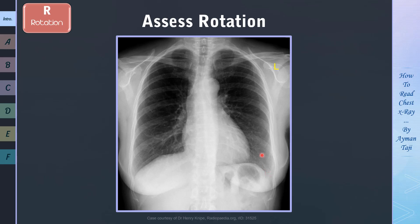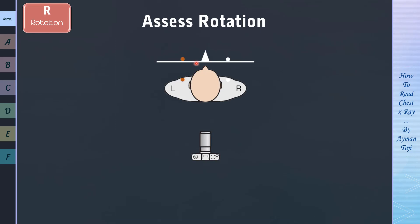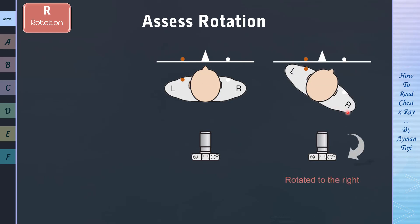And how to assess rotation? Well, in a well-centered X-ray, the medial end of the clavicles should be equidistant from the spinous process. So the distance here will be the same as here. And what if the patient is rotated? To simplify things, let's say that normally the patient will be like this. The orange and white dots represent the medial end of clavicles, and the white triangle represents the spinous process. And here how they will be presented normally in a CXR.